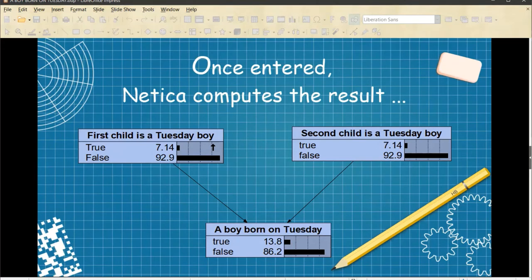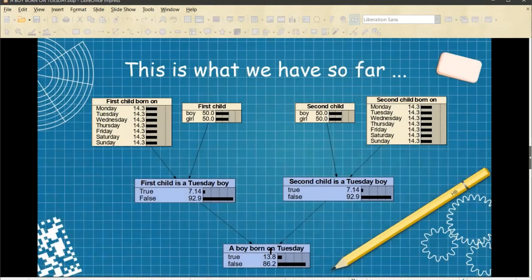Now, this is what we have so far, linking everything we've got. These are the two nodes for the first child, the two nodes for the second child. And this relates these two nodes, and this relates these two nodes. And then this relates this node and this node. But we need one more thing.